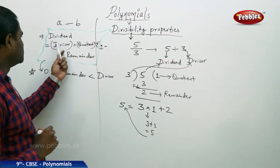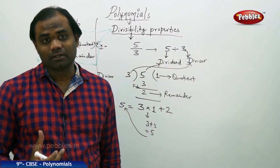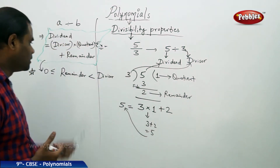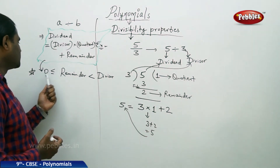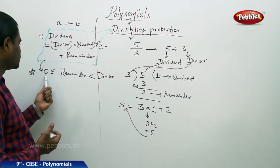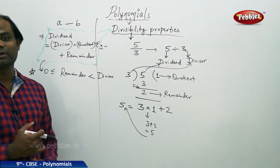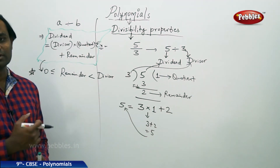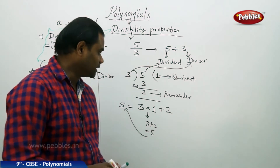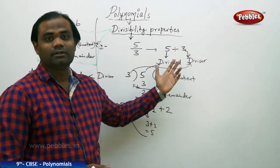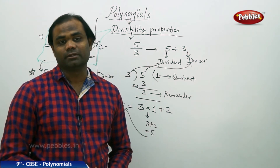The remainder can never exceed the divisor and is always non-negative. So we have: 0 ≤ remainder < divisor. This is how we understand the divisibility properties connecting the divisor, dividend, quotient, and remainder.